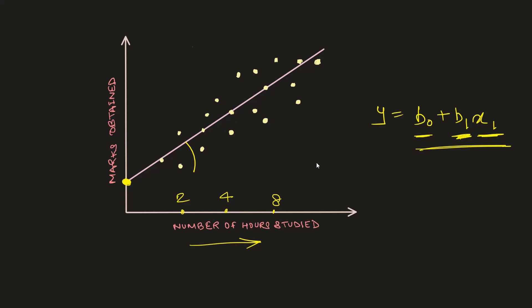If we want to draw a straight line that goes through these data points in such a way that the loss is minimum, all we are doing is achieving the best value for the bias b0 and the slope b1. By adjusting these two parameters, we can finally achieve this best fit line.